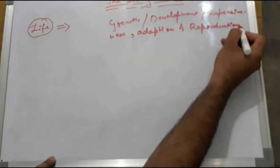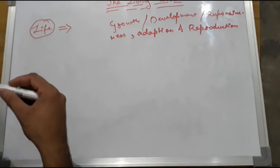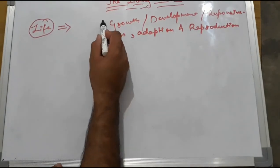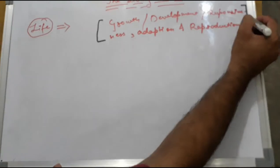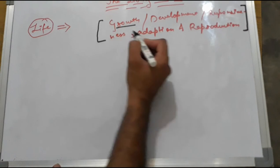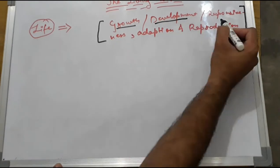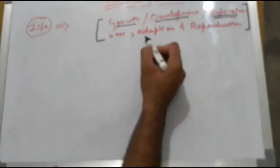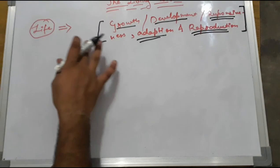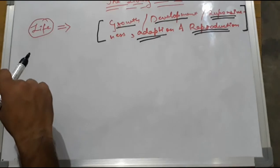Life is a unique complex organization of molecules. It expresses itself with reactions. And there are some factors that define each living organism. One of the main points is growth, development, responsiveness, adaptation, and reproduction. These factors show the living beings. But there are differences in living beings.